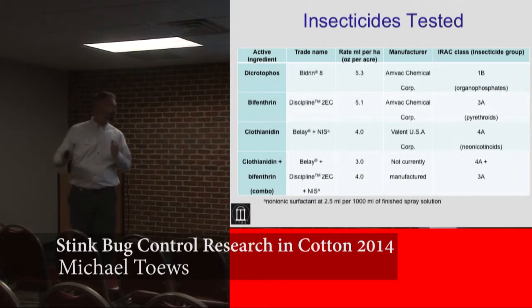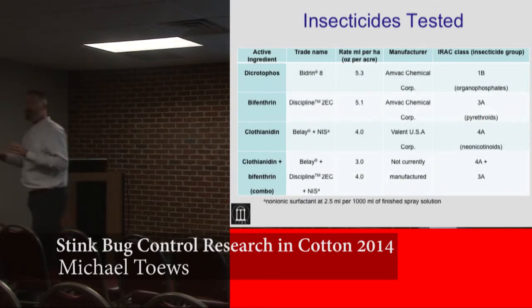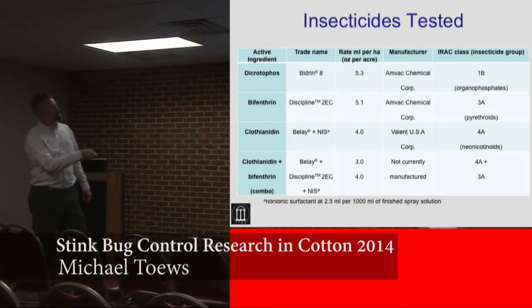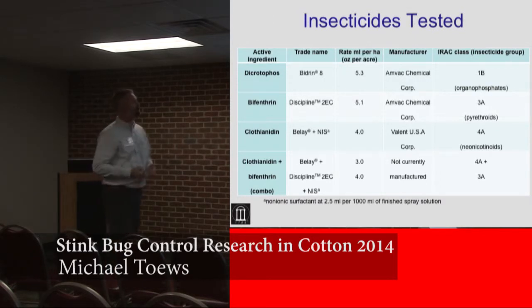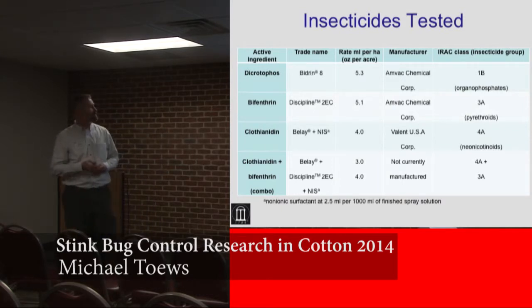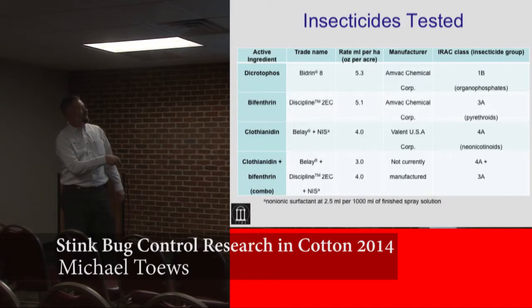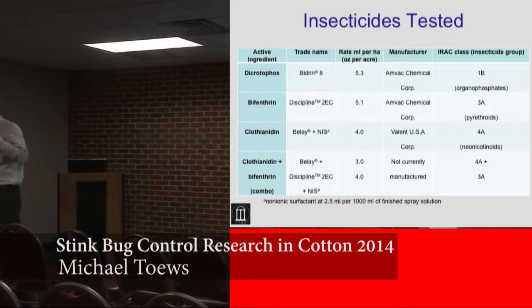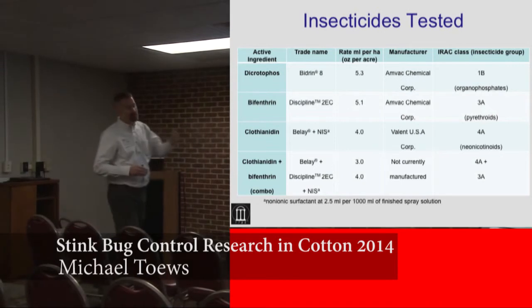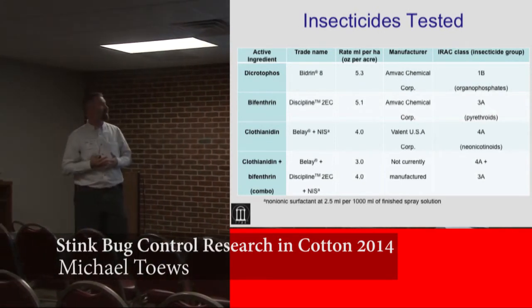These are the insecticides we worked with — I'm trying to get a broad collection of different chemistry types used in the field. There's Dicrotophos, that's Bidrin, at 5.3 ounces per acre. Bifenthrin can be acquired generically, but here as Discipline at 5.1. Clothianidin is a newer neonicotinoid class insecticide. Then there's a tank mix at slightly reduced rates — Belay at 3 ounces and Bifenthrin at 4 ounces — that's not commercially available at this time, but expected to be offered soon, so we wanted to get data on it. We've got entirely different classes of chemistries that we're looking at.